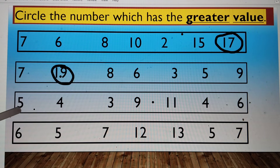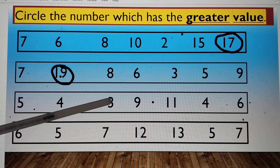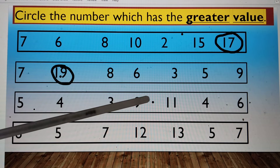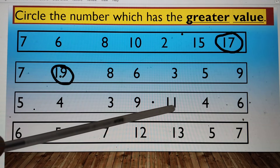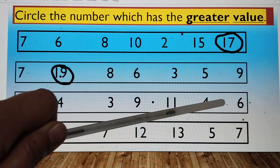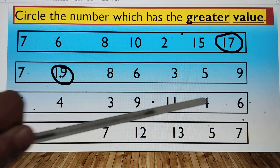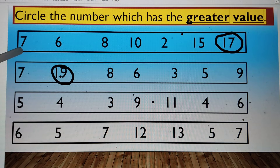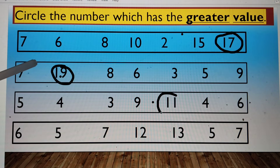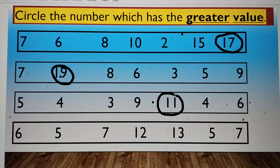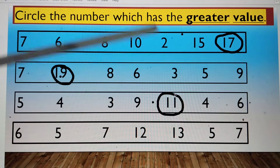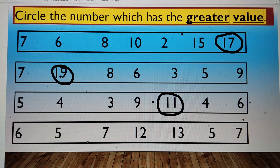In this series, we have number 5, number 4, number 3, number 9, number 11, number 4, and number 6. Number 11 is the greatest because it's a double digit number while the others are single digit numbers.